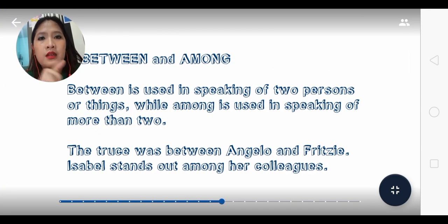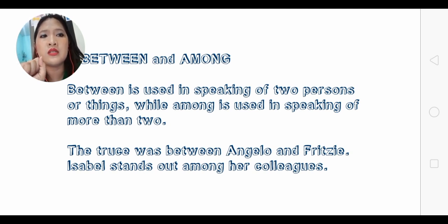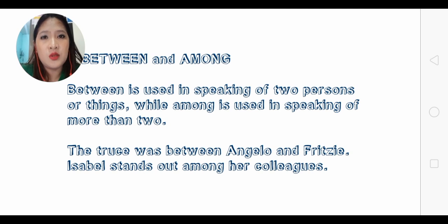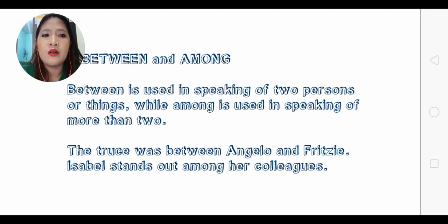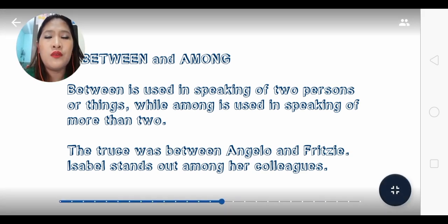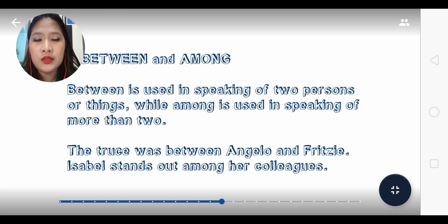Next is 'between' and 'among.' 'Between' is usually used for two persons or things, while 'among' is used for more than two. Example: 'The truth was between Angelo and Fritzi' — only two people. 'Isabel stands out among her colleagues' — more than two people are involved. If you're talking about two people, use 'between'; for three or more, use 'among.'